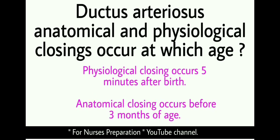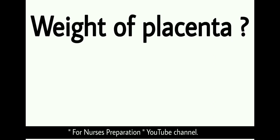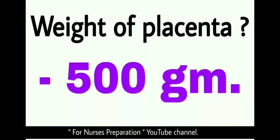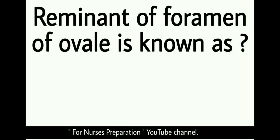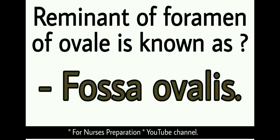Ductus arteriosus: at which age do anatomical and physiological closings occur? The answer is: physiological closing of ductus arteriosus occurs at 5 minutes after birth, and anatomical closing of ductus arteriosus occurs before 3 months of age. Weight of placenta is approximately 500 grams. The remnant of foramen ovale is known as fossa ovalis.